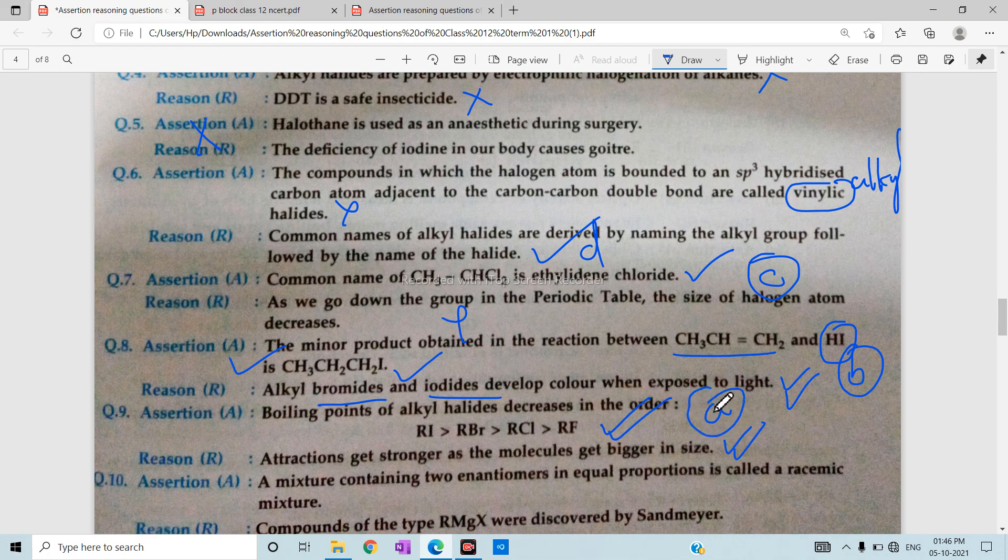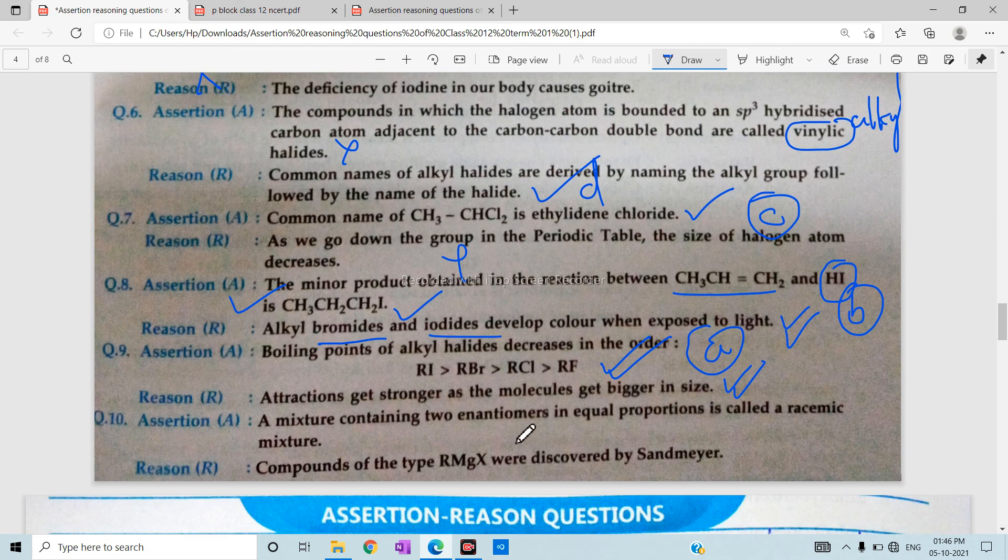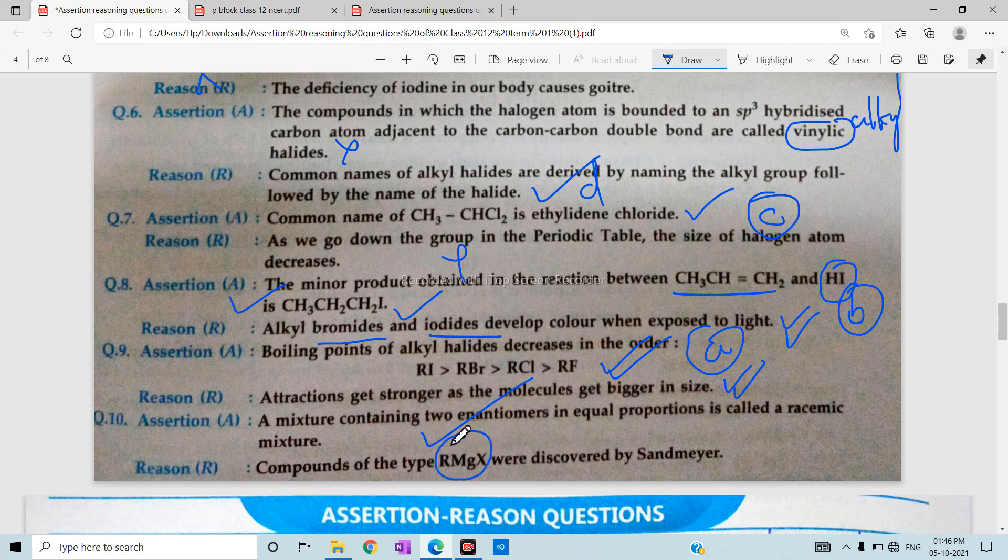After that, we say that the mixture containing two enantiomers in equal proportion is correct. But this is wrong. What do we say? We remember that it is called Grignard reagent. Sandmeyer discovered Grignard reagent. Grignard only will do that.